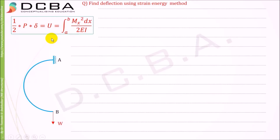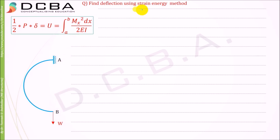Hello and welcome to TCBA. In this lecture we are going to solve the problem of a semi-circular cantilever beam and we need to find the deflection at point B using the strain energy method.